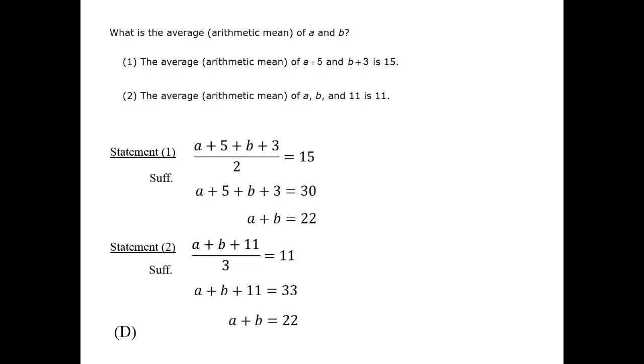Both statements can also be evaluated purely conceptually. Statement 2 is simpler. If the average of three numbers is 11 and one of them is 11, the number 11, as a member of the set, does nothing to adjust the average of the numbers in the set.